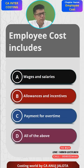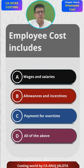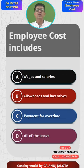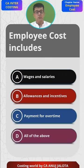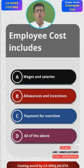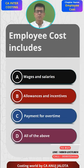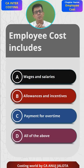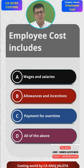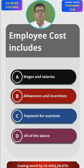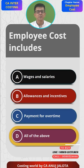Direct labor cost — if you have done your cost sheet properly — will include wages and salaries, since workers are paid wages or salaries. Then they are given transport allowance, and incentives if efficient, such as a bonus, so option B is also correct. Option C: if a worker has to work beyond normal time, we pay for overtime, which is still part of labor cost. So A, B, and C are all included as part of employee cost. Therefore the answer, very simply, is D — all of the above.